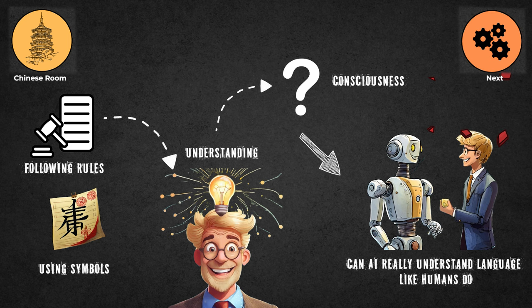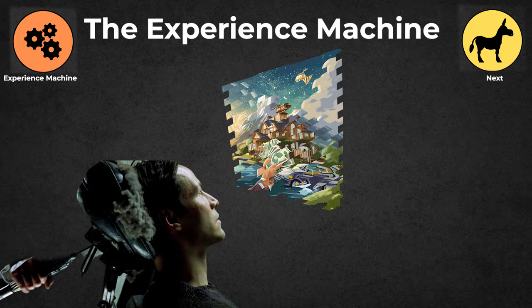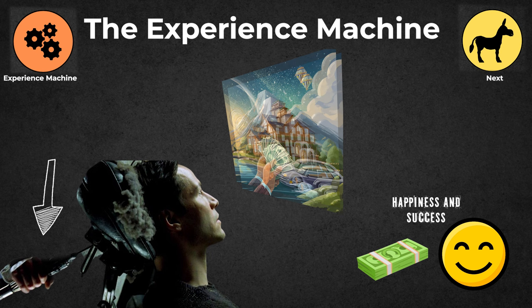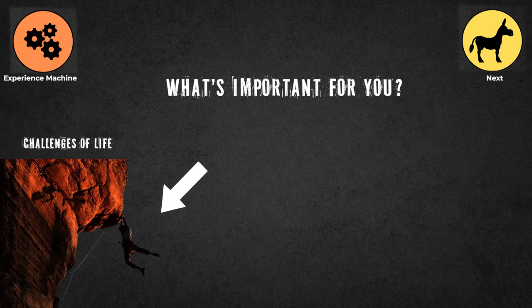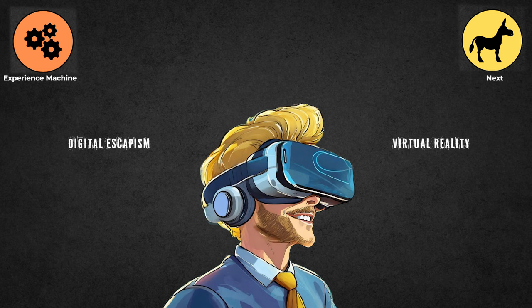The Experience Machine: Imagine you're offered a machine that can make you feel like you're living your dream life. Everything would be perfect. You'd have all the happiness and success you want, but here's the catch - it's not real. You'd just be plugged into a machine, experiencing a fake world. The big question is, would you choose this fake happiness over real life? This experiment makes us think about what really matters to us, whether it's the real experiences and challenges of life, or just feeling good, even if it's not real. Virtual reality and digital escapism in today's world come to mind.